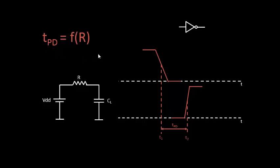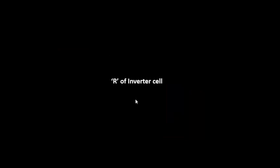Propagation delay is a function of resistance. Now the next step is to identify what it is about the resistance that is so dependent on the drain current — how resistance varies, and how it connects to the variations we discussed in the initial videos. Let's look into the resistance of an inverter cell — specifically, the resistance of a MOSFET transistor inside an inverter cell.